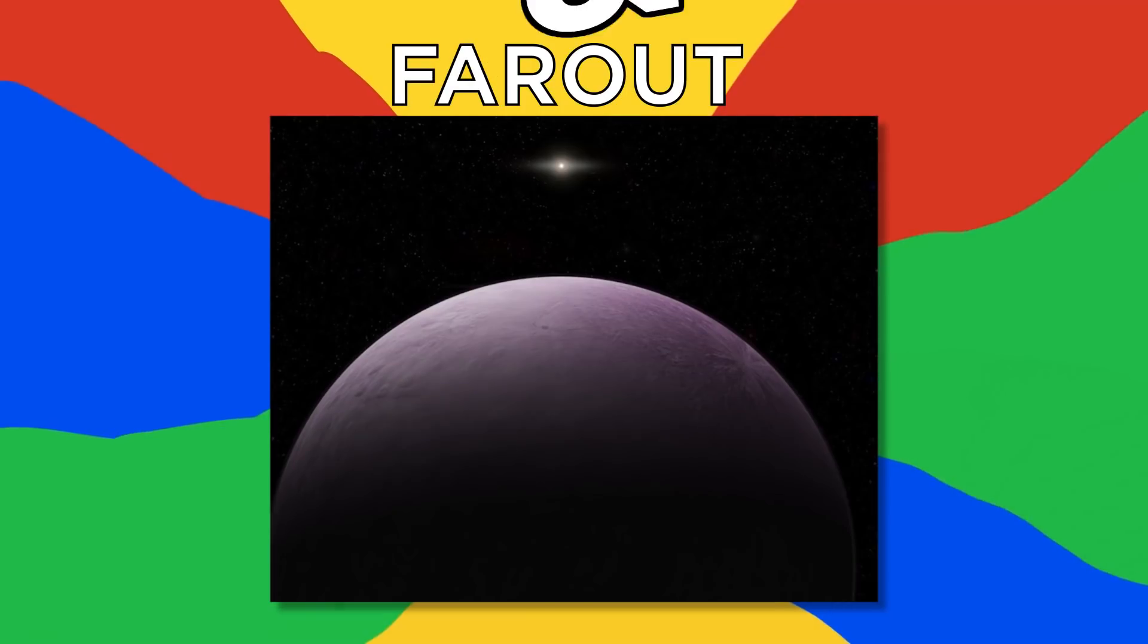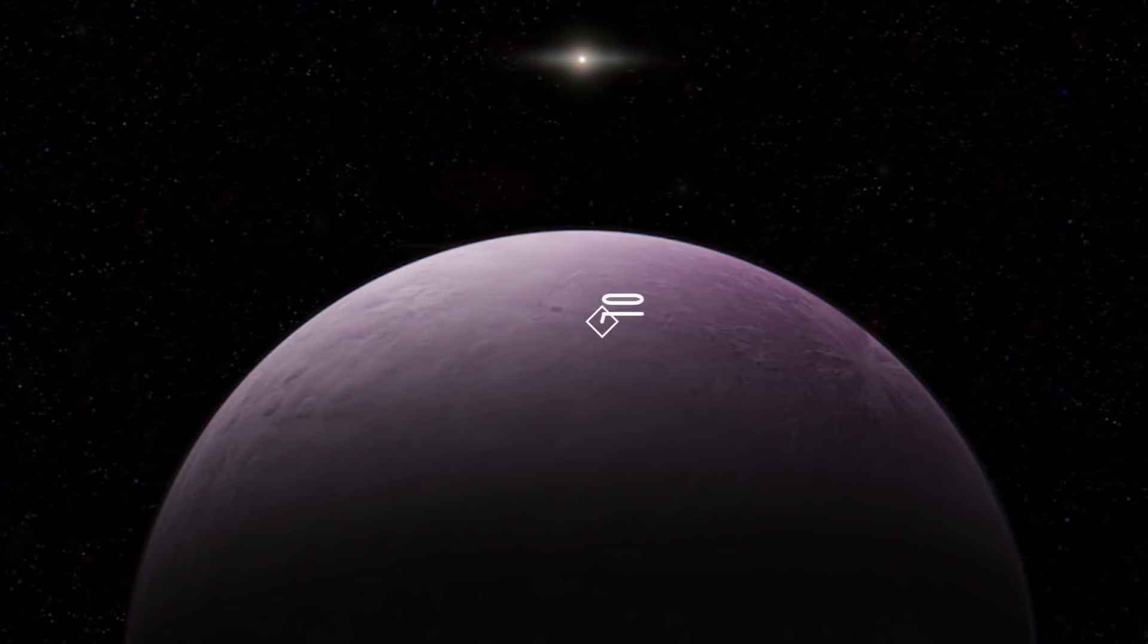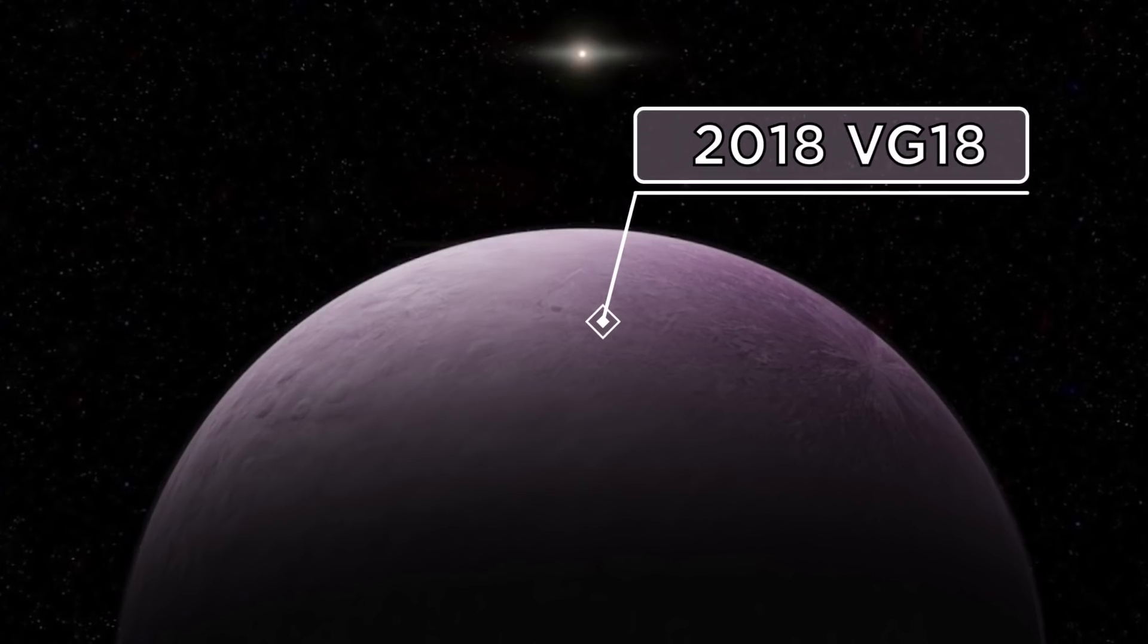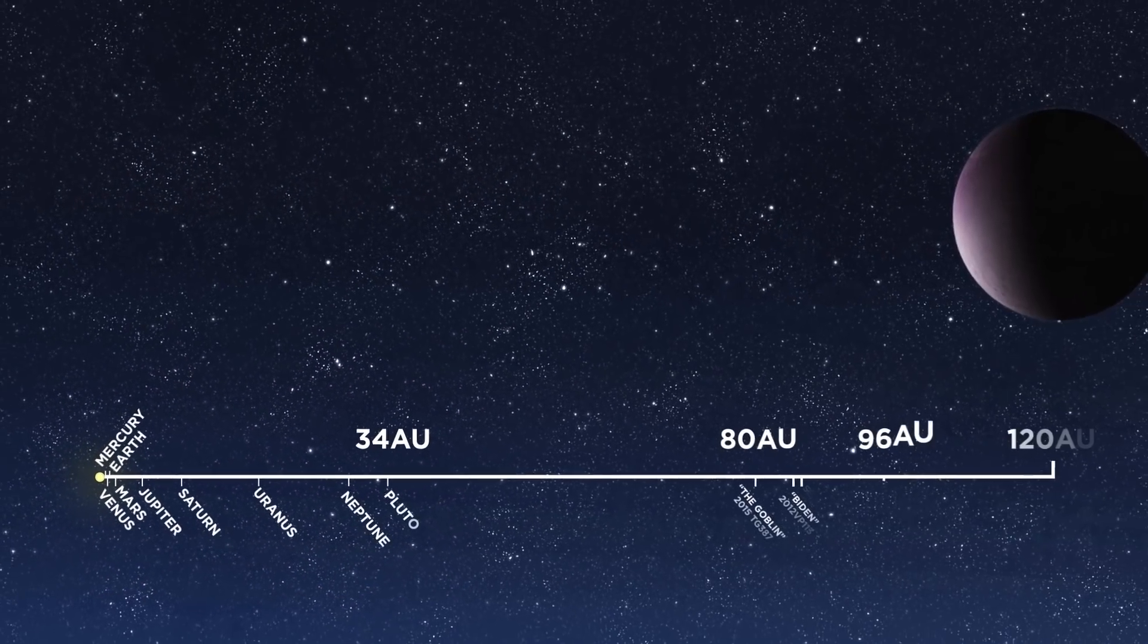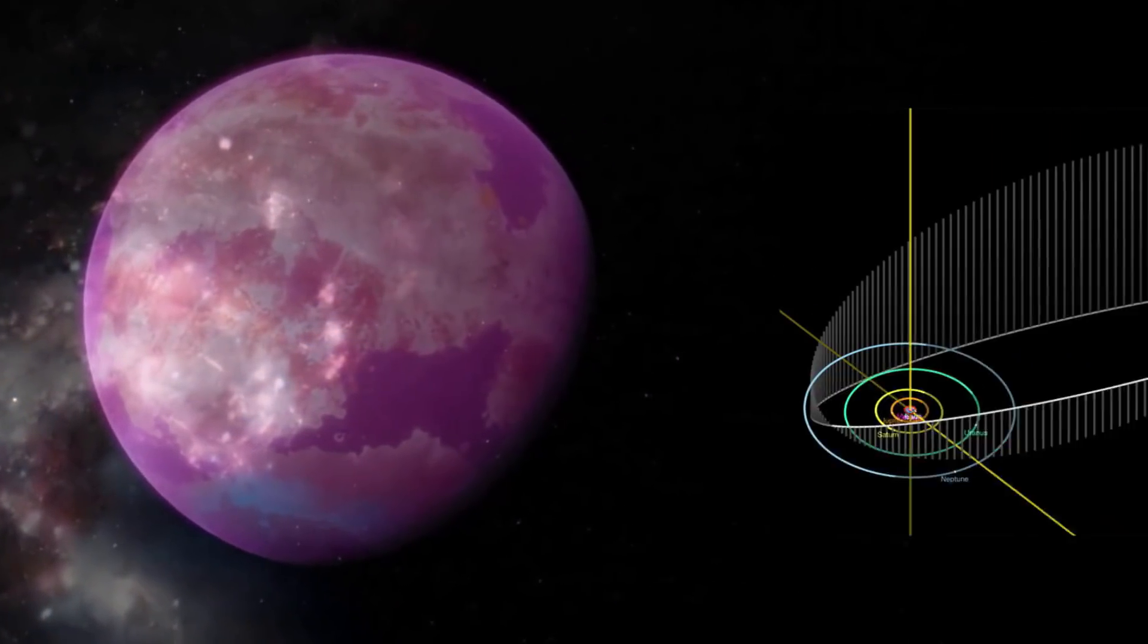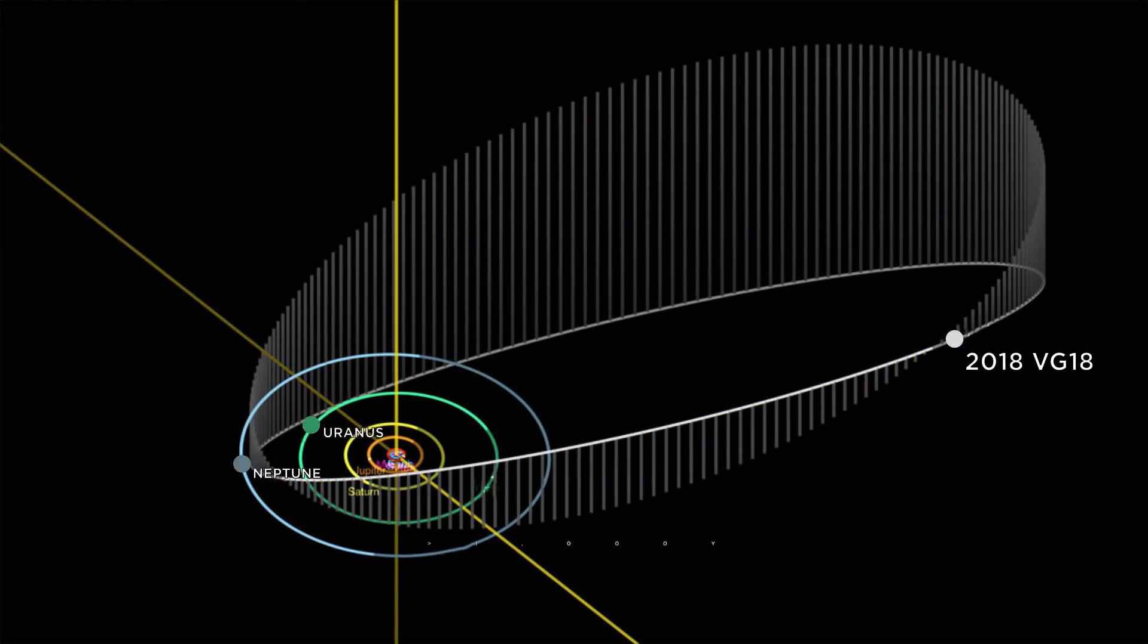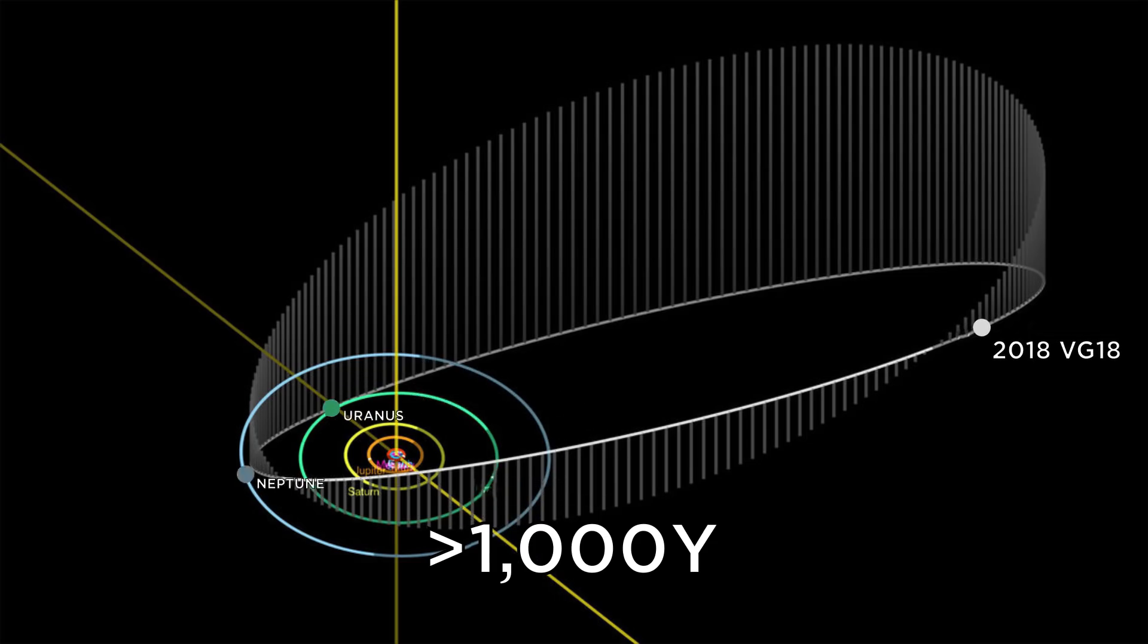Number 13, Far Out. In December 2018, scientists discovered the dwarf planet 2018 VG18. It's the farthest known body in the solar system, hence its nickname, Far Out. It's the only object in the solar system orbiting at more than 100 times the distance from the Earth to the sun. In other words, Far Out takes more than a thousand years to make a single orbit around the sun.